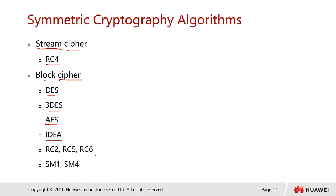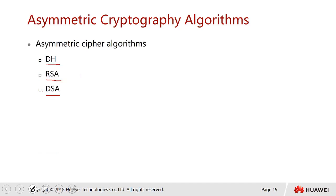Now let's look at asymmetric cryptography algorithms. We have three common types of asymmetric encryption algorithms. The first is DH, which stands for Diffie-Hellman.